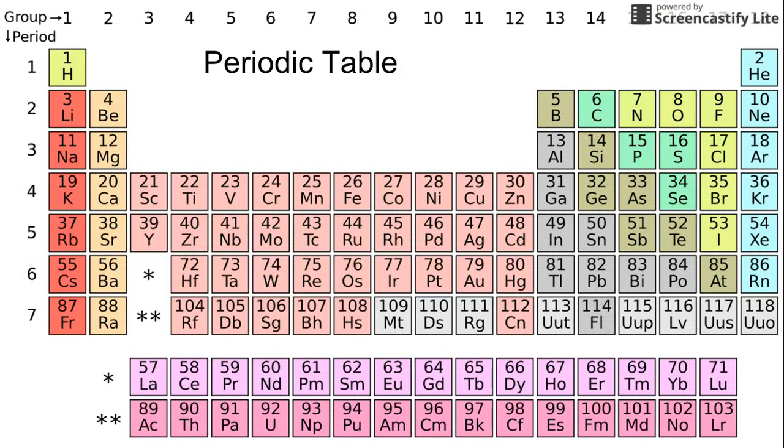So this is an example of a very simple periodic table. And in this one, all it shows you is that atomic number and the symbol and not the atomic mass. On the one that you have for class though, it does show all of those three things.